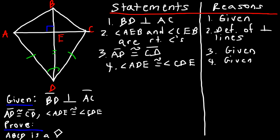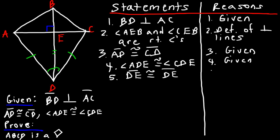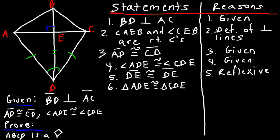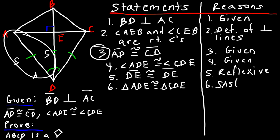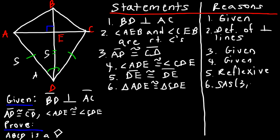Notice we have a common side, so we can show the two triangles are congruent. Statement five: DE is congruent to DE by the reflexive property. Now with a common side established, we say triangle ADE is congruent to triangle CDE by the SAS postulate, using statements three, four, and five.